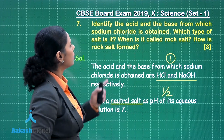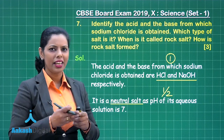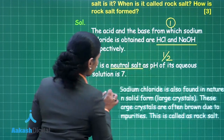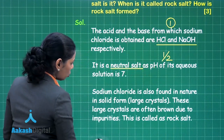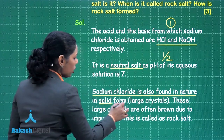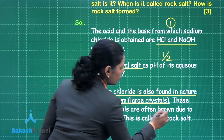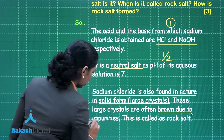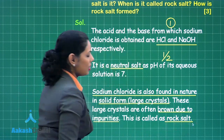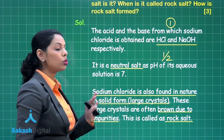The next part is: when is it called rock salt? Sodium chloride is also found in nature in solid form, in the form of large crystals. These large crystals are often brown in color due to impurities, and this is called rock salt.